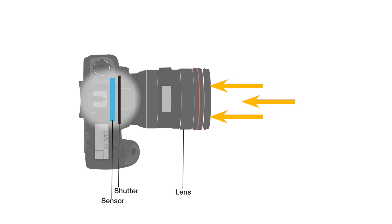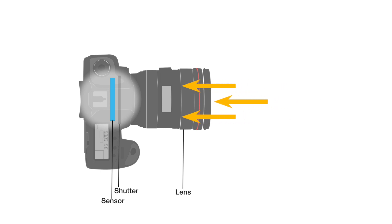These days, we have digital cameras. And while they might look similar to film cameras in terms of appearance, they function differently. On a very basic level, when you press the shutter button, a digital camera works by operating a mechanism called a shutter that then lets light through a hole in the lens, also called the aperture.